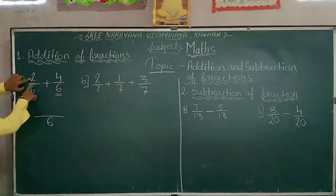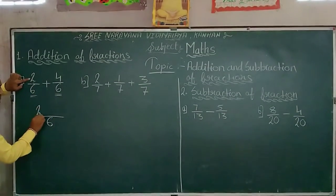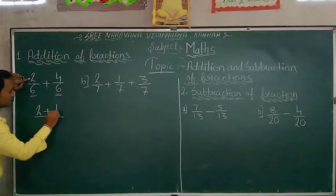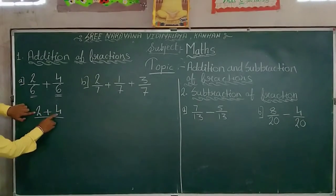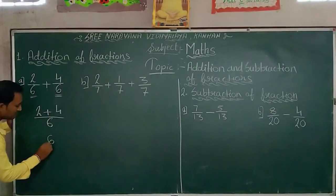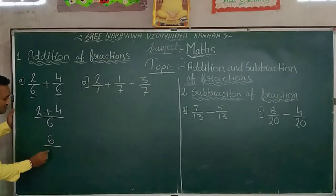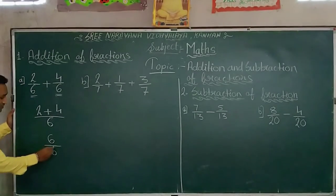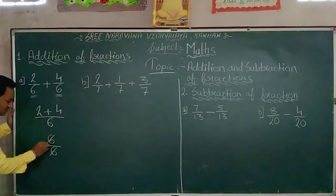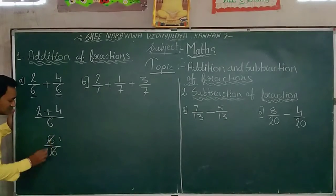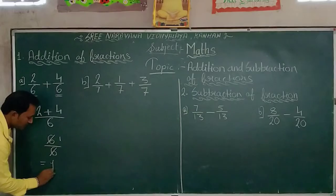And we will add numerators. 2 plus 4. It means 2 plus 4 becomes 6 and this 6 will return here as it is. Now 6 and 6 means 6 ones are 6. Our answer is 1.